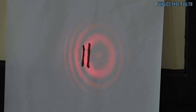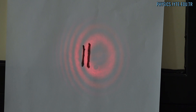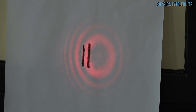Now we start with 4 micrometers and we are going to change up to 3 micrometers, and we are going to count the fringes. If we focus on the two parallel lines, we can see where the first fringe begins.